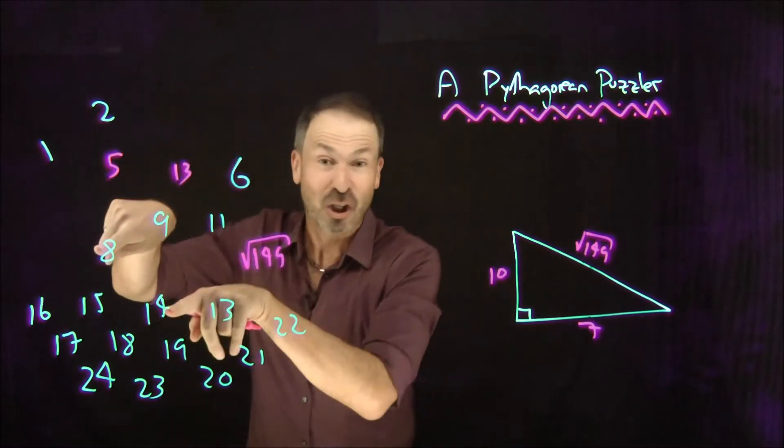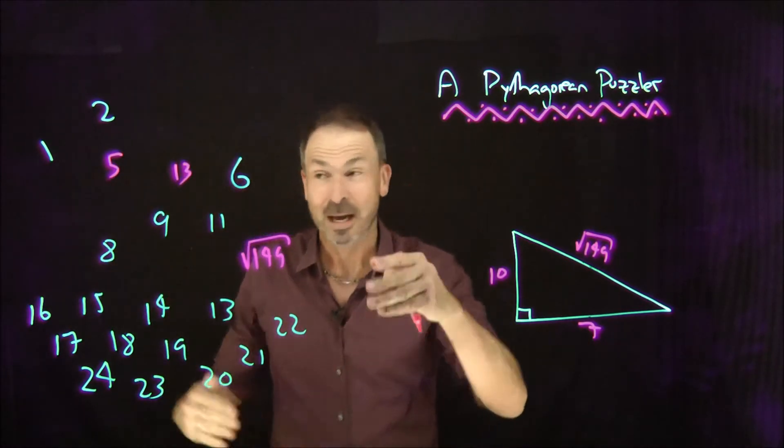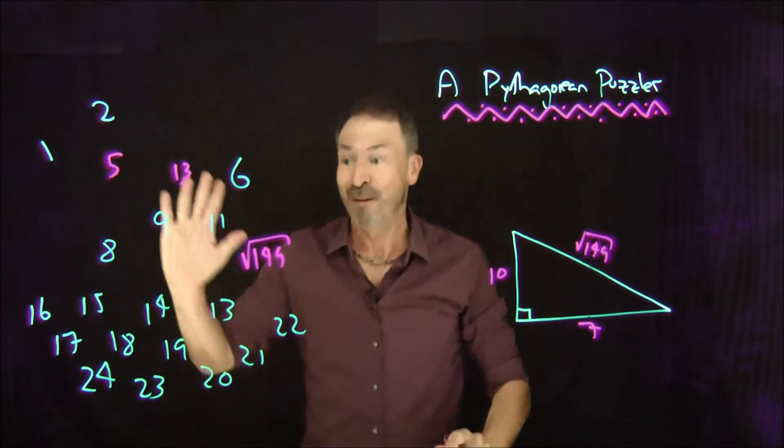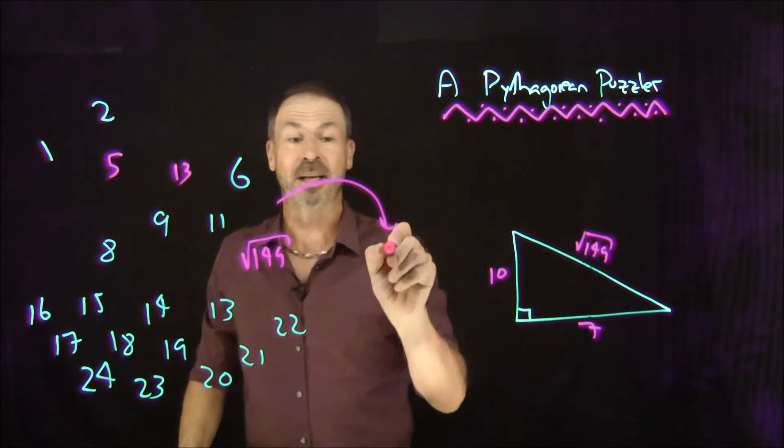In fact, you can see, every time I choose two numbers and replace them with one number, so the count of numbers on the board is going down every single time. So eventually, I'm going to end up with one single number.